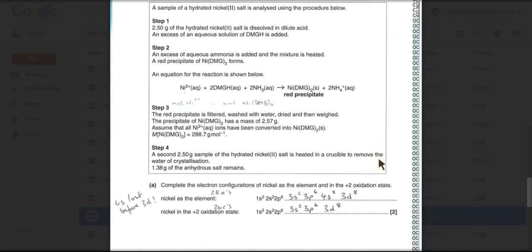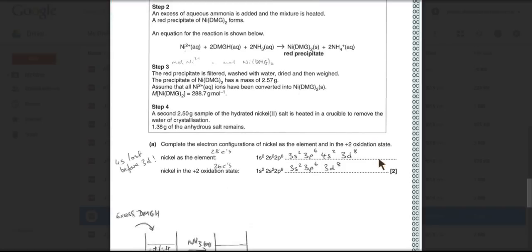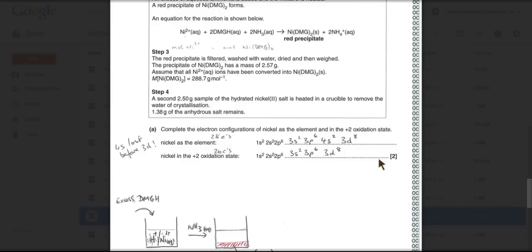So the first part, part A, electronic configurations of nickel as the element and in its plus 2 oxidation state. So nickel the element has 28 electrons and so that would finish off 3s2, 3p6, 4s2, 3d8. The examiner won't mind which way round you write the 4s and the 3d.